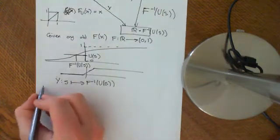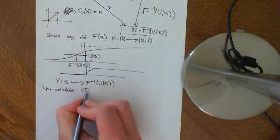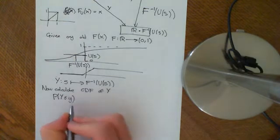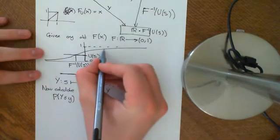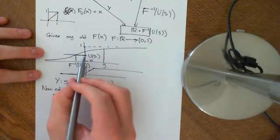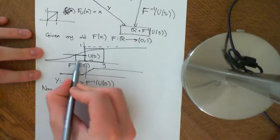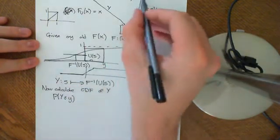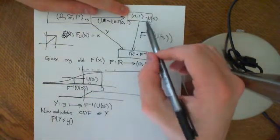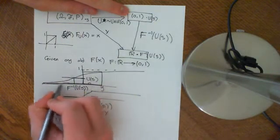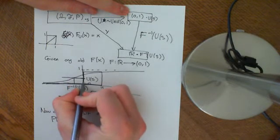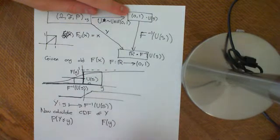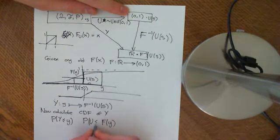Now let's calculate the CDF of this random variable Y. We want the probability that Y ≤ y for some little y in the real numbers. If y got a value less than or equal to that little y, that corresponds to the probability that the U value was mapped into a certain portion of (0,1). Specifically, applying F to y gives a number between 0 and 1, and it reduces to asking the probability that U ≤ F(y).